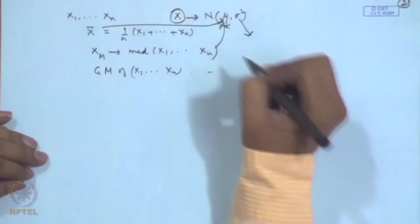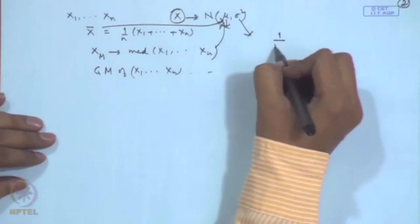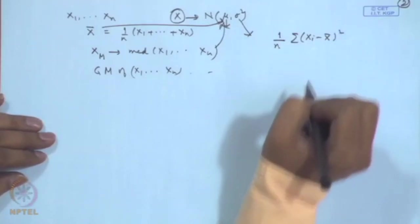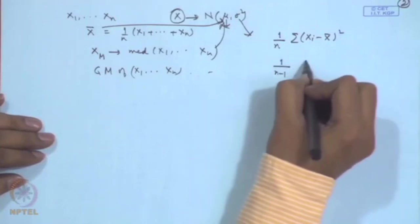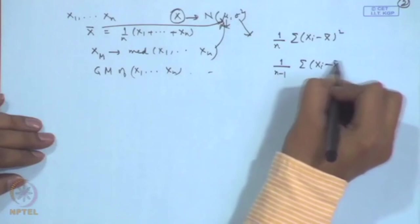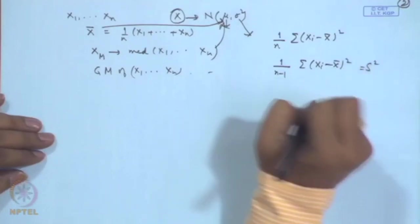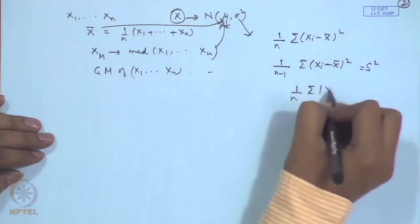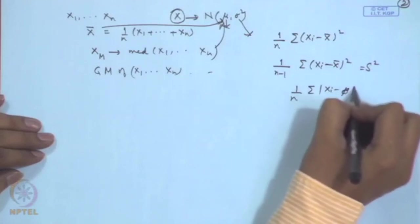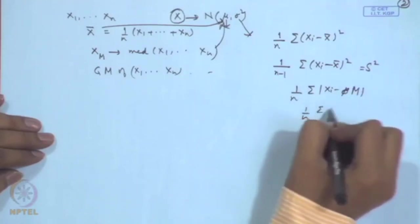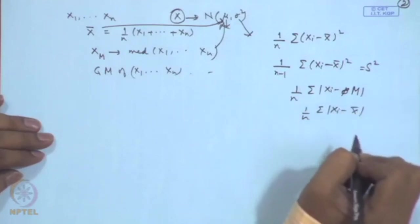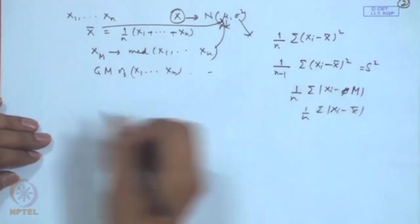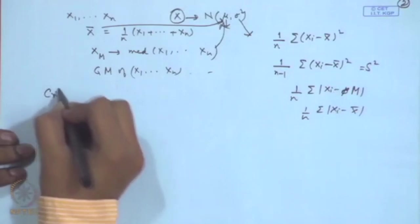Similarly, for estimating σ², one may consider (1/n)Σ(xᵢ - x̄)², or alternatively (1/(n-1))Σ(xᵢ - x̄)², which is called the sample variance. One may also use mean deviation from the median or mean deviation from the mean. The question arises: which one should be used? This brings us to certain criteria of estimation.